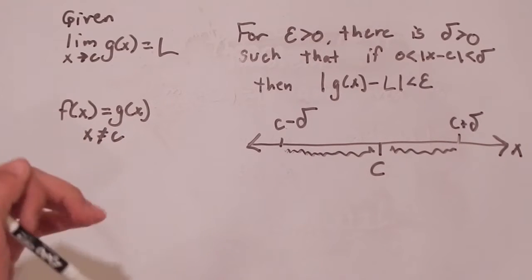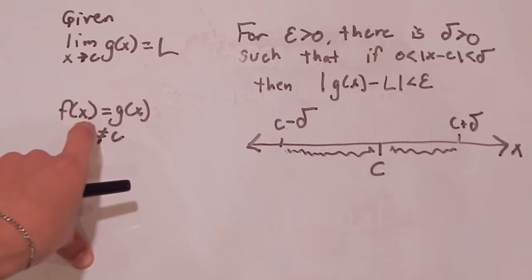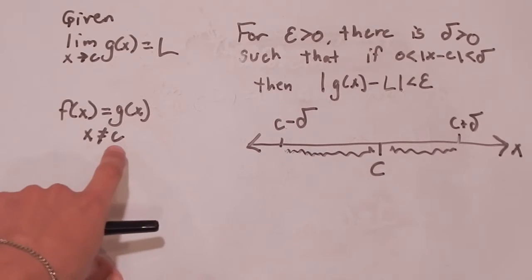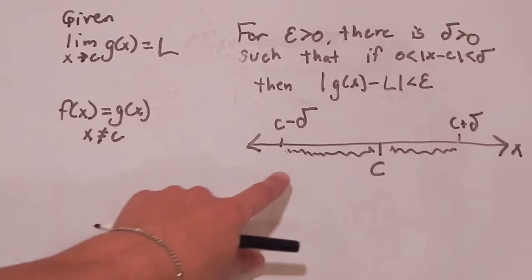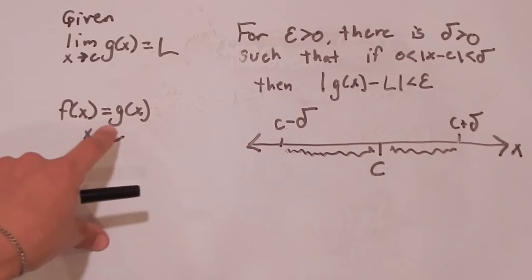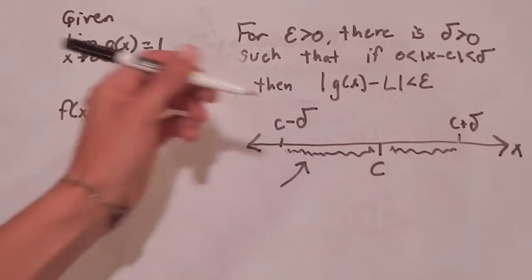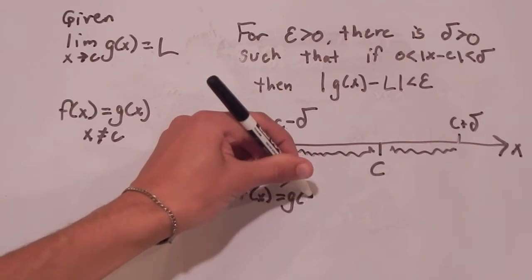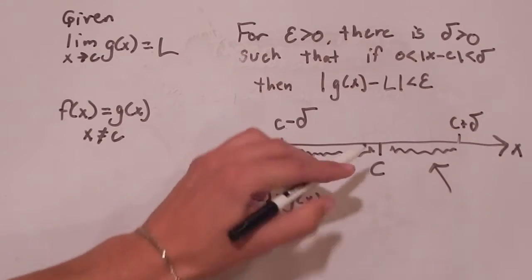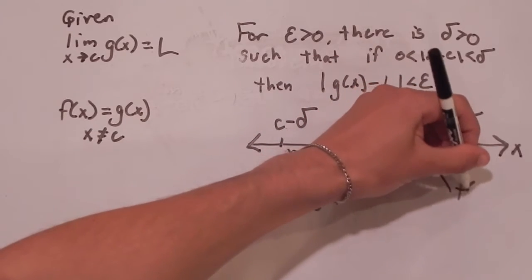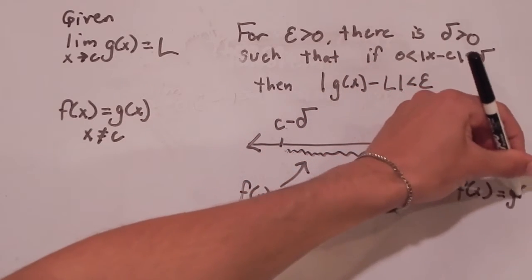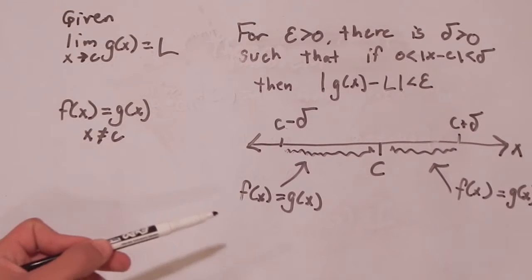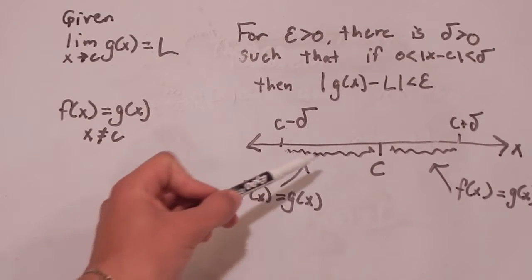So now we have to go on to find the limit that contains F of X instead of G of X. So you'll note that at X equals C, these two do not agree. But on the X values around C, like these values, these two functions do agree. So here, between C minus delta and C, F of X equals G of X. And the same thing here between C and C plus delta, F of X is equal to G of X. The only place where they disagree is at C. But again, we don't care what the functions are at C. We just care what values they approach.